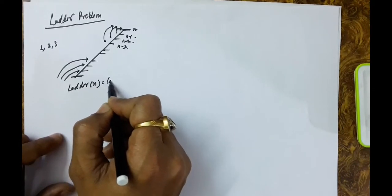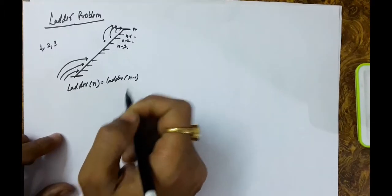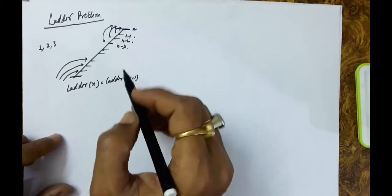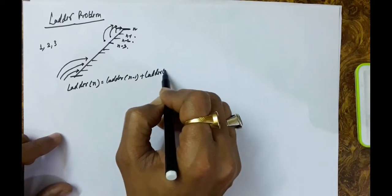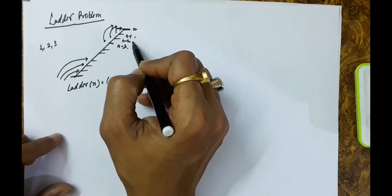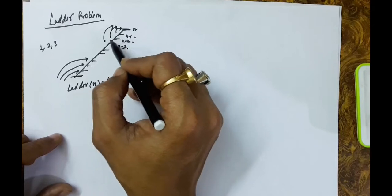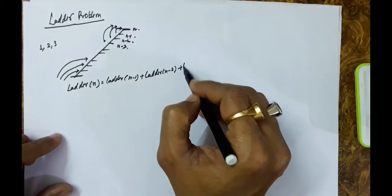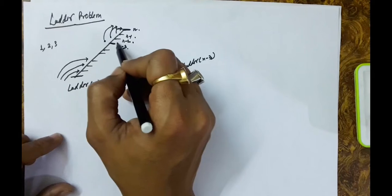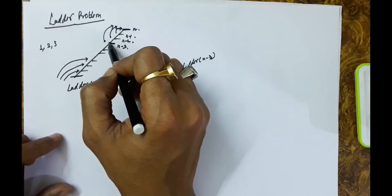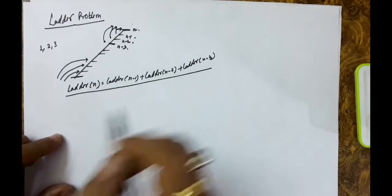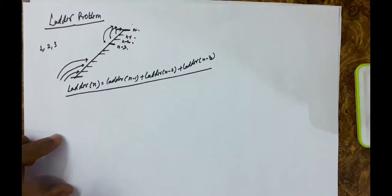So ladder(n) equals ladder(n-1) plus ladder(n-2) plus ladder(n-3). If you have already reached the n minus 1 step, you take one step and reach the top. If you have reached n minus 2, you take two steps simultaneously to reach the top. Or if you have reached n minus 3, you take three steps in a single leap to reach the top. So this has become the recursive formula for finding the total number of ways to reach the top.